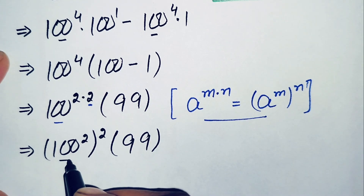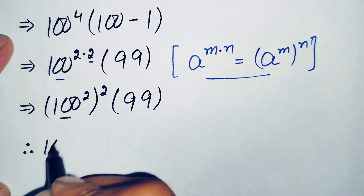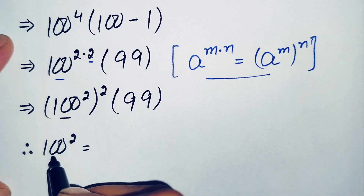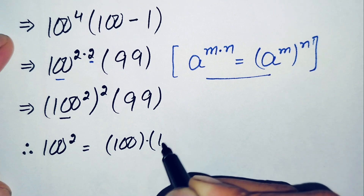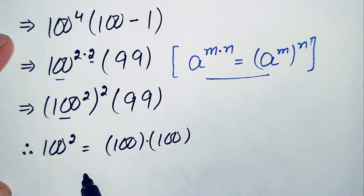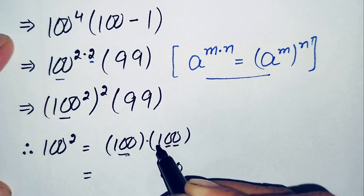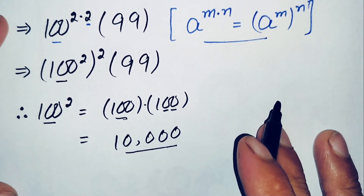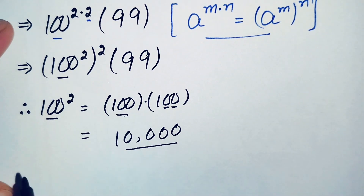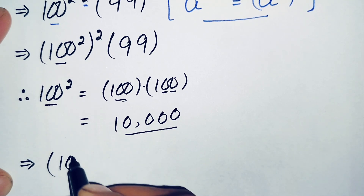Now we find the value of 100 squared. We multiply 100 by 100: 100 times 0 is 0, 100 times 0 is 0, and 100 times 1 is 100, giving us 10,000. So the value of 100 squared is 10,000, and we replace 100 squared with 10,000 in our equation.